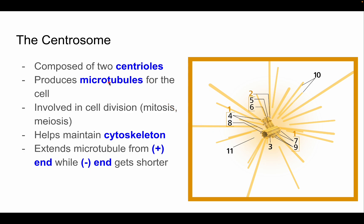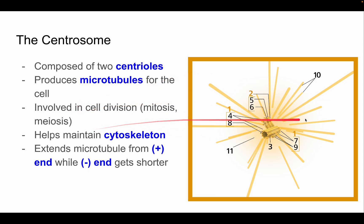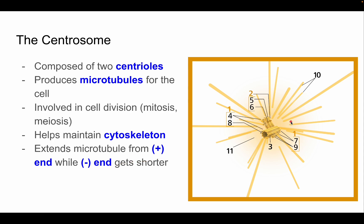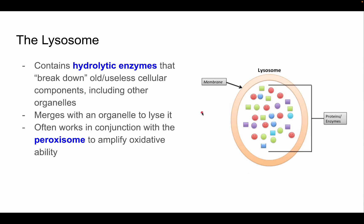The centrosome is a fiber structure composed of two centrioles. It produces microtubules, which are a type of protein dimer involved in the cytoskeleton. Centrosomes are involved in cell division — mitosis and meiosis — serving as the two poles and making up the aster fibers. They help maintain the cytoskeleton; microtubules extend from the plus end while the minus end gets shorter simultaneously.